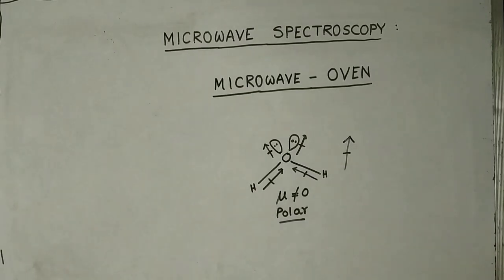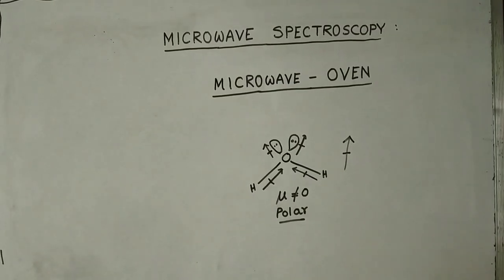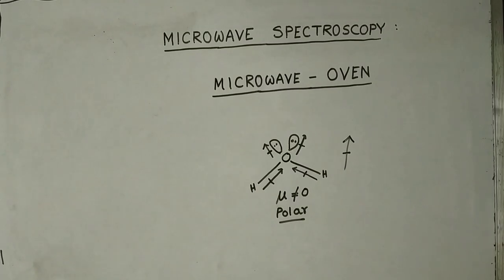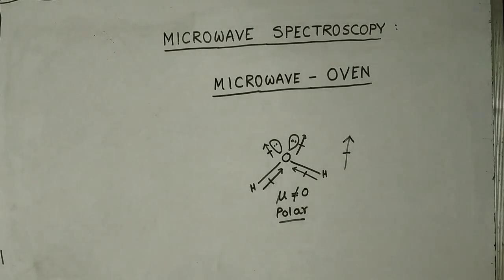Absorbing the microwave radiation, the water molecules are raised to higher rotational levels and become rotationally excited. In the excited state they are unstable and try to emit excess energy. As with many other excited states, the excess rotational energy of the water molecules is re-emitted as heat, and the food becomes cooked.